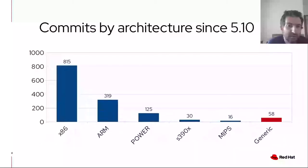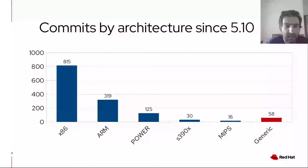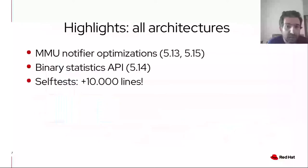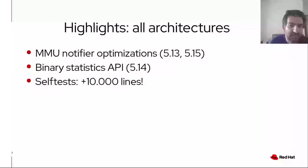About two-thirds of these commits were for the x86 architecture, followed by ARM, which had some interesting projects I will talk about later. And then there's also Power, S390, and MIPS. Regarding the generic commits, the most interesting one is probably the optimization to the EMU notifiers, avoiding that the notifiers take spin locks unnecessarily. There's also a binary statistics API.